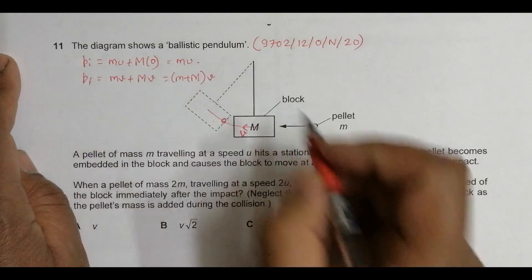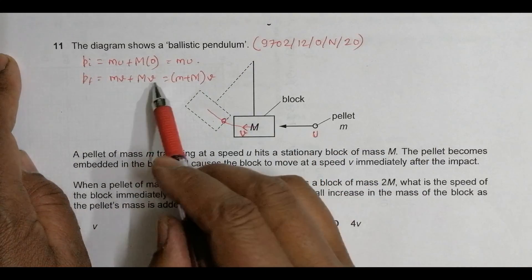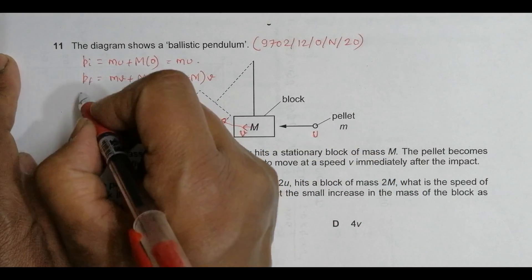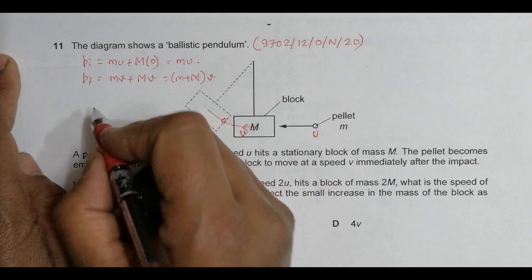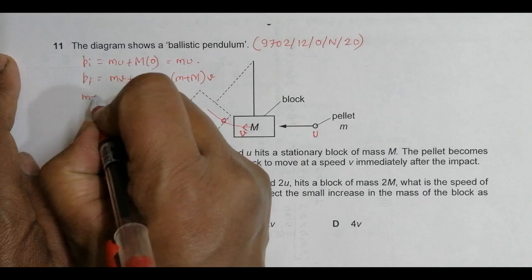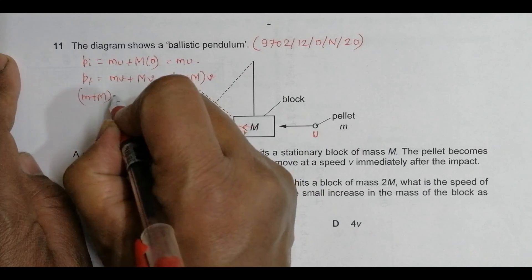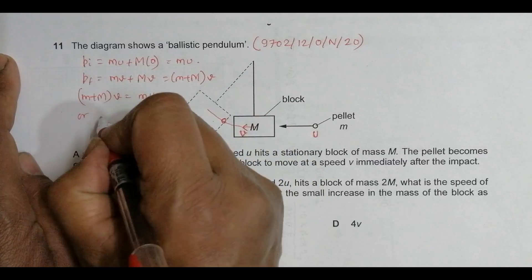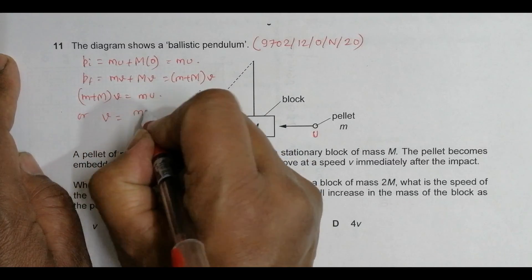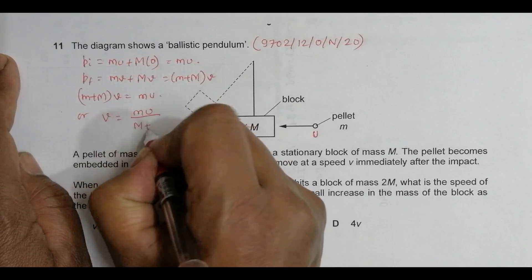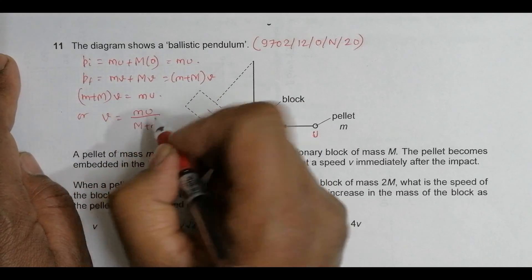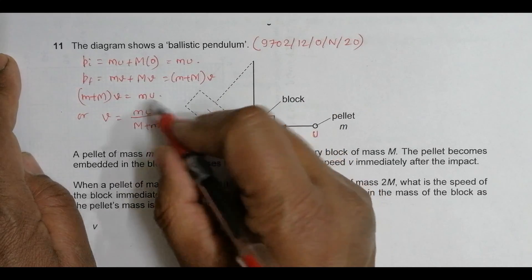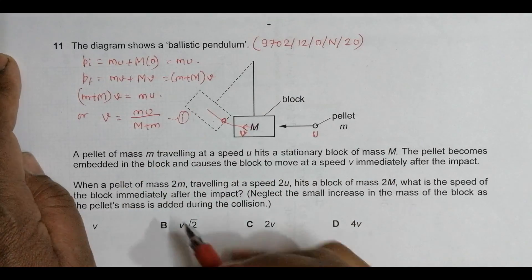Since it's embedded, both have the same velocity. From conservation of momentum, (m+M)V = mu, which gives us V = mu/(m+M). This shows how V is related to these three quantities.